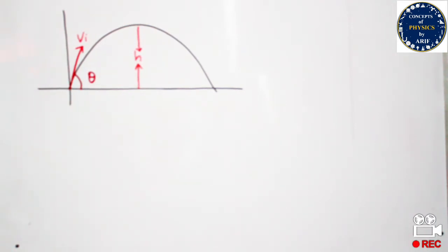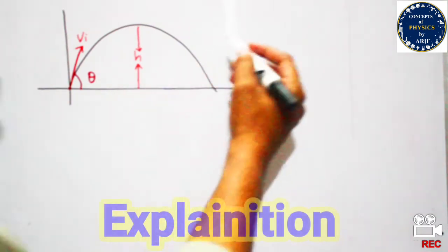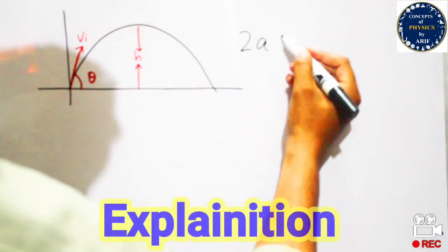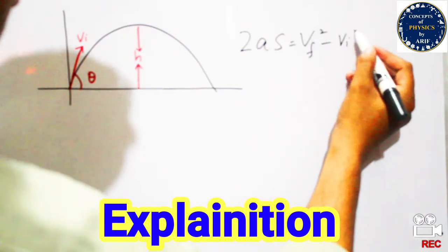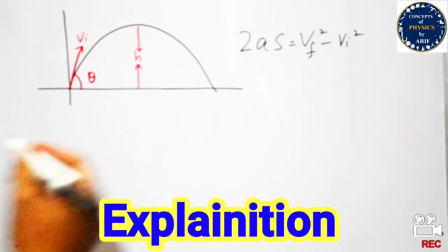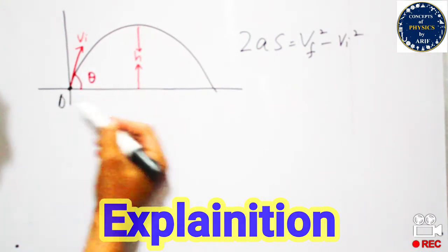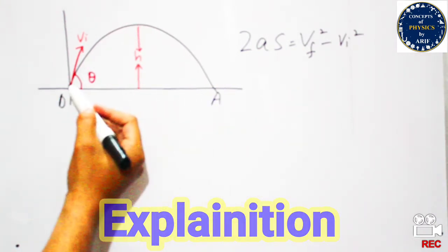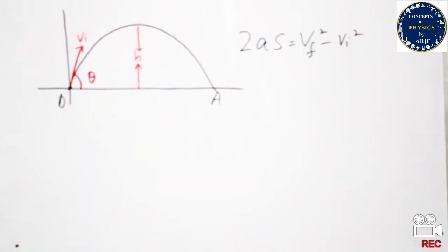Now we will discuss how to determine the maximum height of projectile. We need to use the equation of motion: 2As = Vf² minus Vi². In this case, when this body moves upward from point O to A, its velocity is the initial velocity Vi making some angle theta.